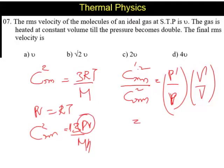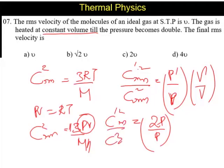P' is given as 2P by P. But V' and V is constant volume, so it is simply—so C'_RMS squared by C_RMS squared is 2P by P.